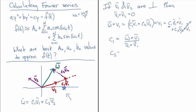And similarly, c2 is going to be w dotted with v2 divided by v2 dotted with v2. Now, why does this have anything to do with Fourier series? Well, that's a little bit harder to motivate.